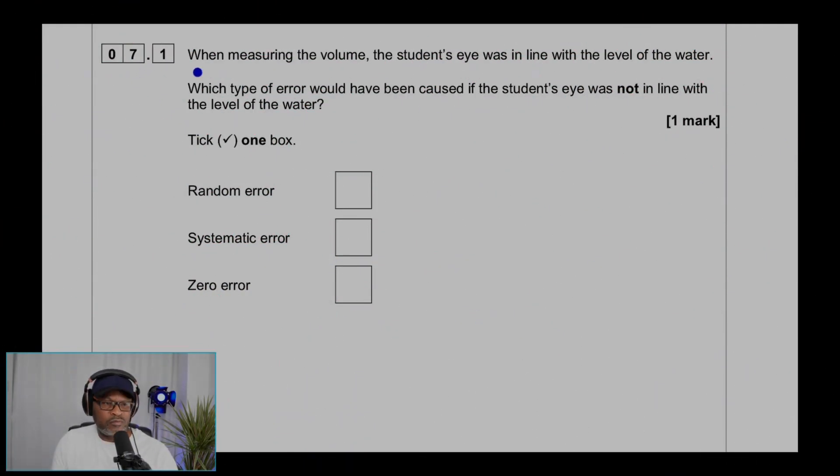Question 7.1: When measuring the volume, the student's eye was in line with the level of the water. Which type of error would have been caused if the student's eye was not in line with the level of the water? That would be a random error, because systematic error is to do with the instrument and zero error is to do with the instrument reading a value before you placed an object on it.